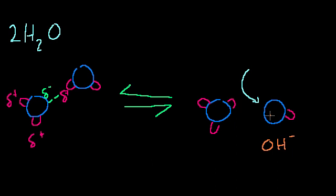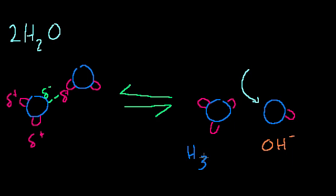And it has a minus charge. Because water was a neutral molecule — you had just as many protons and electrons. Now we have one less proton than electrons. So in this case, just the hydrogen nucleus itself, which is just a proton — because hydrogen doesn't have any neutrons in its normal form — gets bumped off and ends up on this other water molecule. So this molecule lost a proton, has the same number of electrons, and now has a negative charge. The other one has the same electrons but an extra proton, so it has a positive charge — this is H3O+, called hydronium.